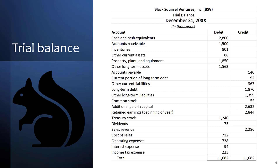Let's look at Black Squirrel Ventures' trial balance. This is not a financial statement for Black Squirrel — it is just a listing of all their account balances by debit or credit. We have a debit column and a credit column. Within assets, cash is always first. Assets and liabilities are listed in order of liquidity — those items closest to being cash or being used up or being due first are listed first. Then we list stockholders' equity accounts, followed by revenues, and finally expenses. Accounts are listed in whichever column according to their balance — debit balances in the left column, credit balances in the credit column.